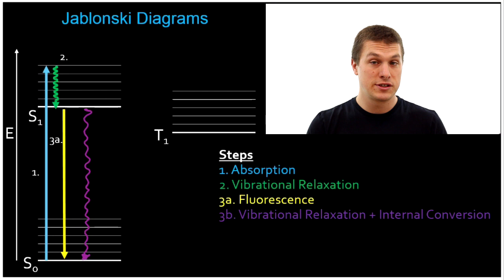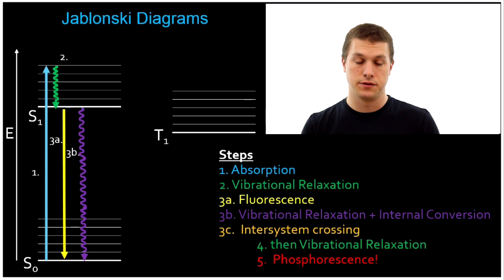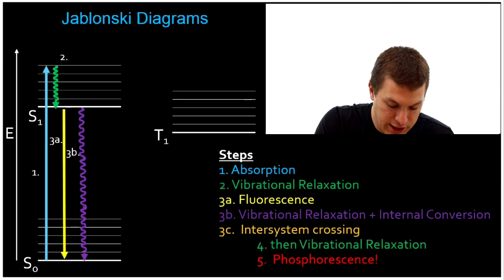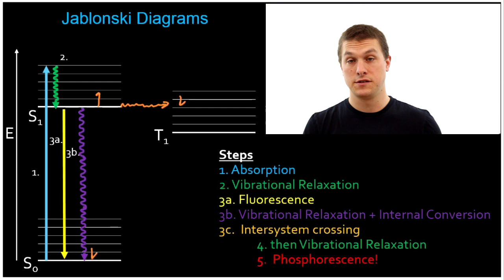There's actually another thing that can happen in step 3 — it can also undergo what's called intersystem crossing, which we'll use orange for. Intersystem crossing is a transition from a singlet to a triplet. After our vibrational relaxation, our electron — let's say it's spin up — if its spin flips to spin down, and the electron it was paired with is also spin down, now it has a net spin that's not zero, so it's in the triplet state. So intersystem crossing is a transition from a singlet state to a triplet state.